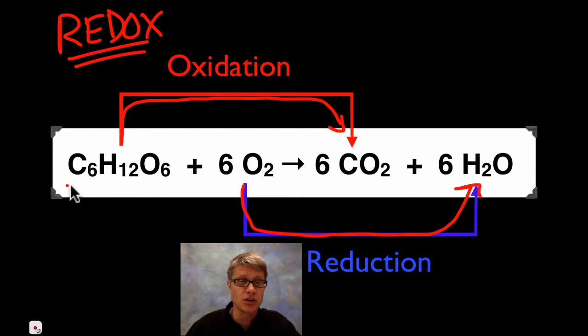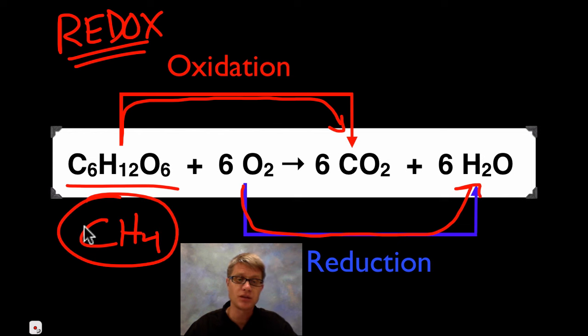But this doesn't have to be sugar up here. This could be for example methane gas. What you burn in a Bunsen burner. And so as we lose those electrons in there we get energy in the form of heat. Or this could be propane or gasoline or anything like that is a redox reaction. Losing electrons and gaining electrons.